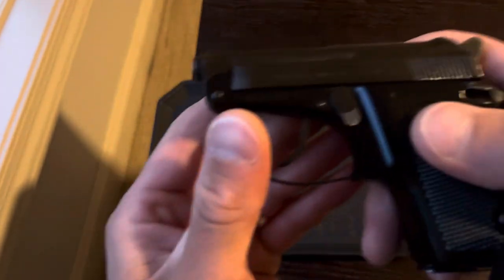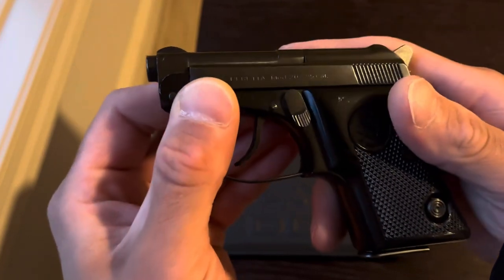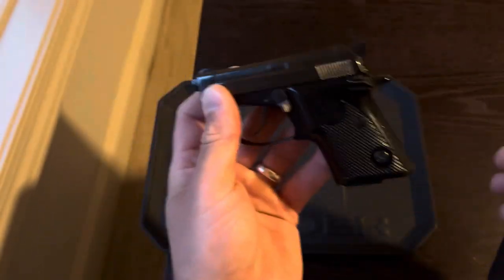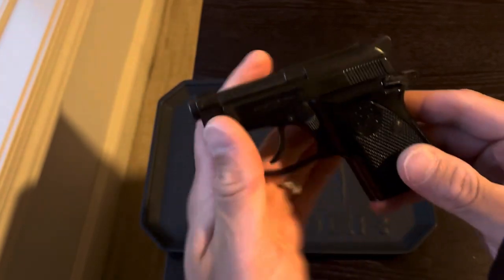And this is the Beretta, as you can see right here, the Model 20, chambered in 25. Now, yes, a very small round, I know what you're thinking, but let me start by saying this.